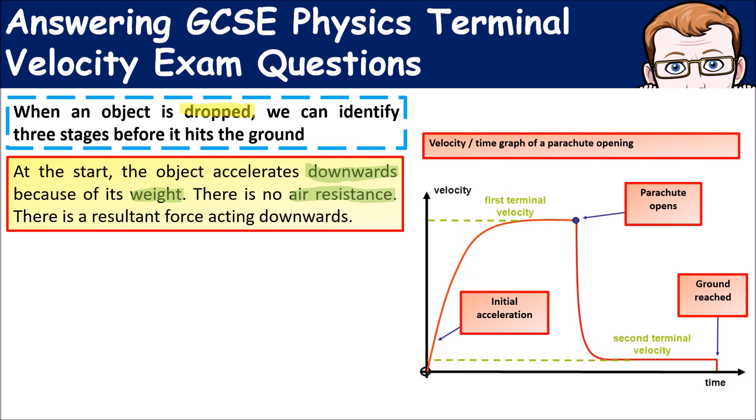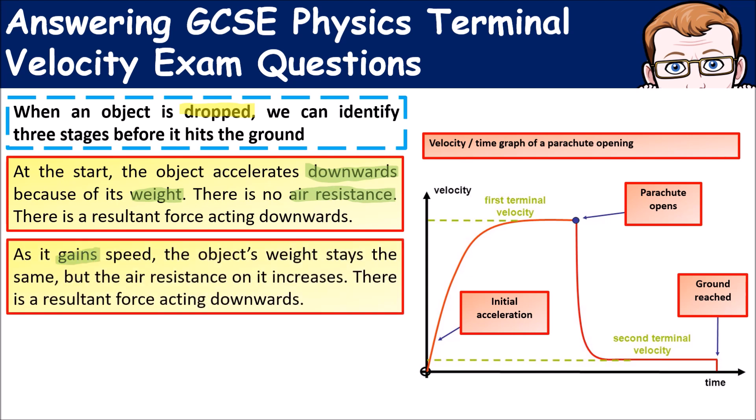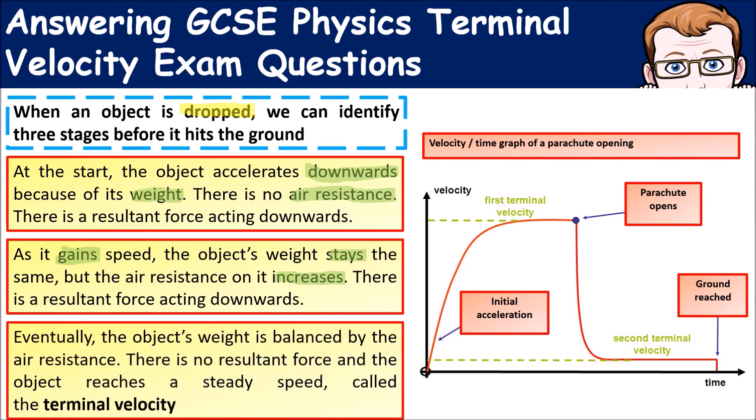As it gains speed, its weight stays the same, but the air resistance on it increases. There's now a resultant force acting in the opposite direction. Eventually, the weight and air resistance are balanced, which means there'll be zero resultant force on it, so it will fall at a steady speed. It won't accelerate anymore, and at that point we can say it has reached terminal velocity.